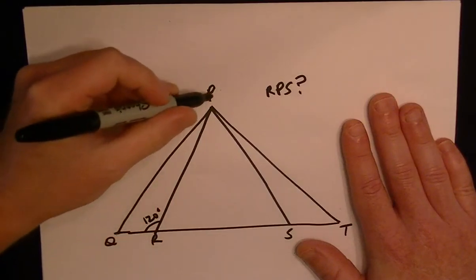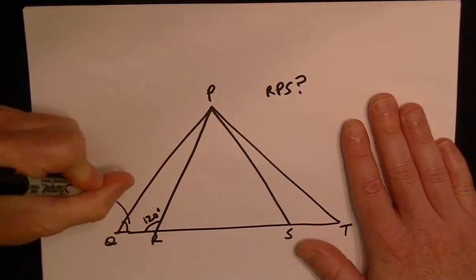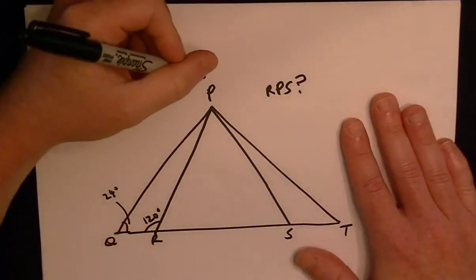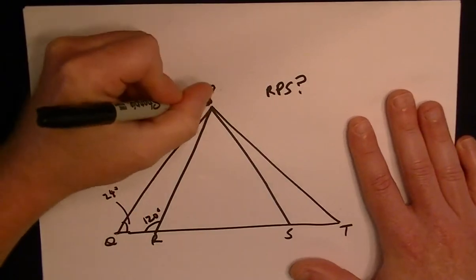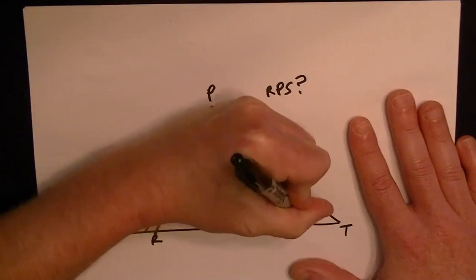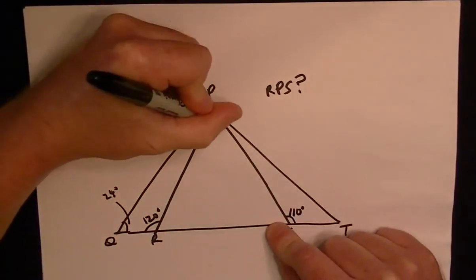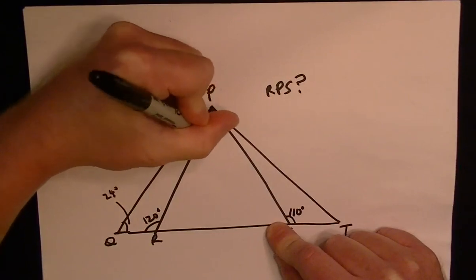We're also told that PQR is equal to 24 degrees, so just mark it in there. And we're also told that PST, so this angle, is equal to 110 degrees. So the angle we're looking for, RPS, which is this angle, we'll just put a theta there for now because we don't know what it is.